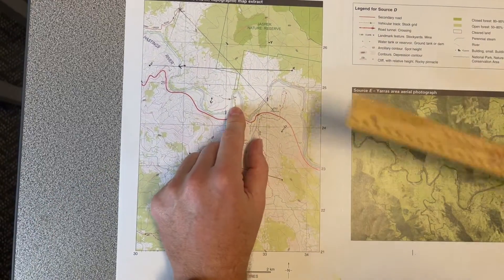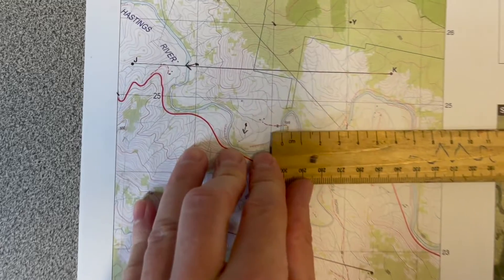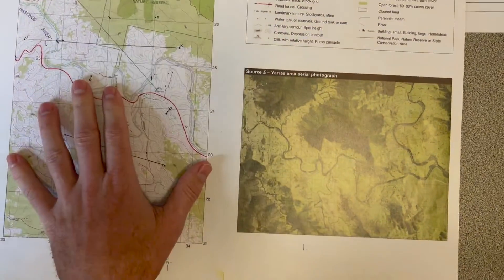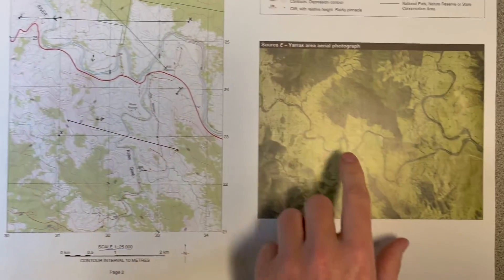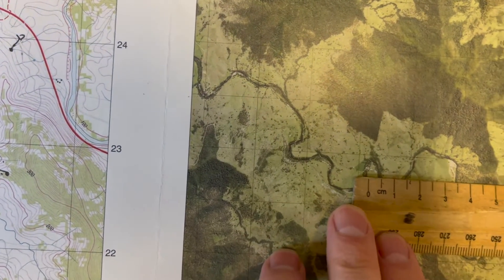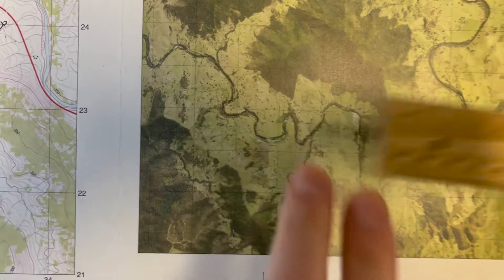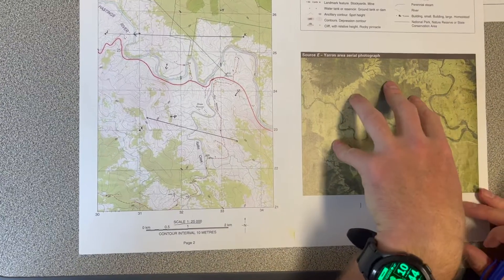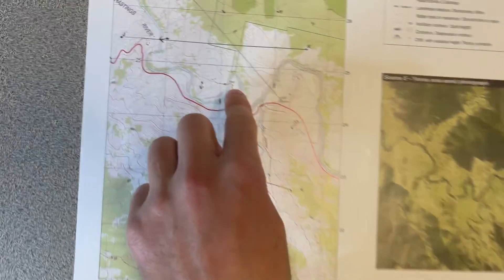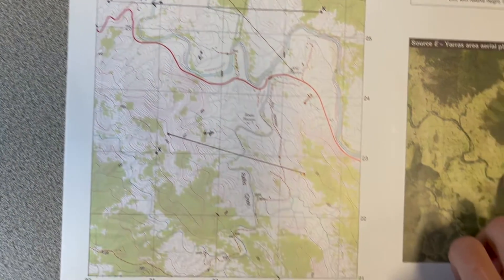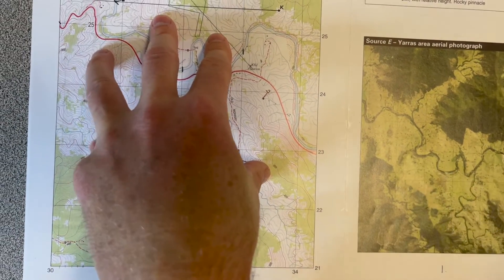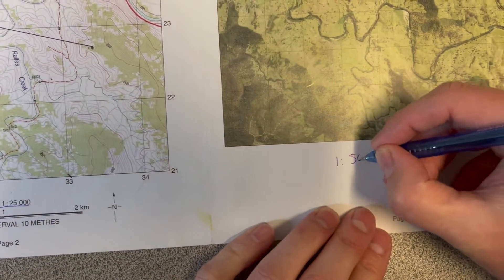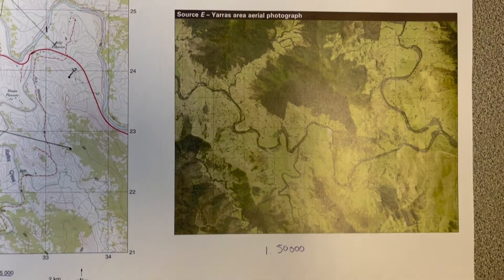First we go to the map that we know the scale of. We find the middle of this meander, put our ruler, and we can see that it's exactly one centimeter between those two parts of the river. One centimeter. We go over to the same meander on the photo, put our ruler down, and we see that it is exactly half a centimeter. So we already know that is the smaller scale, so it must be a bigger number. That distance is twice that distance, which means the scale must be twice as large, which means we just have to double the number.